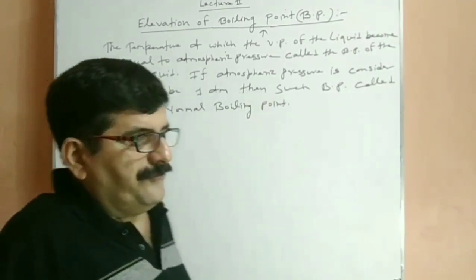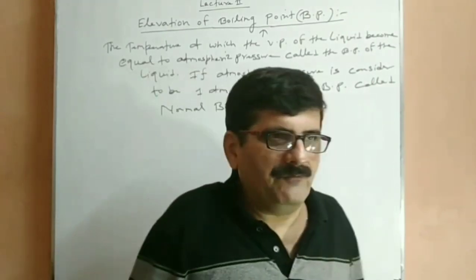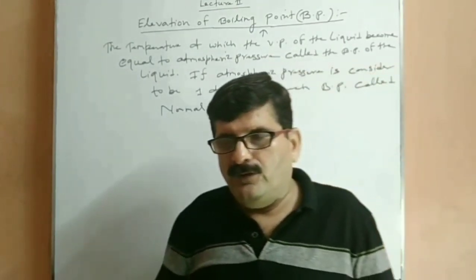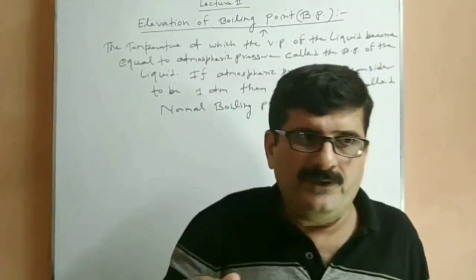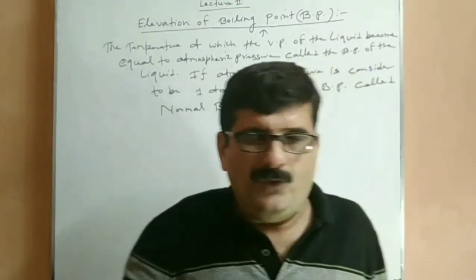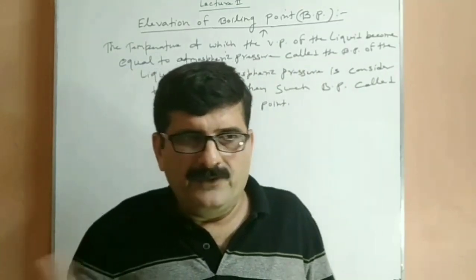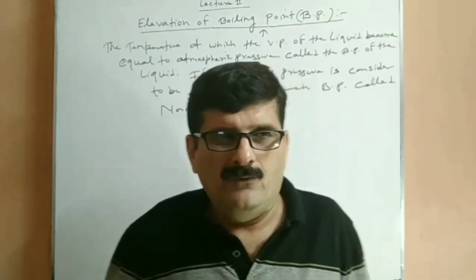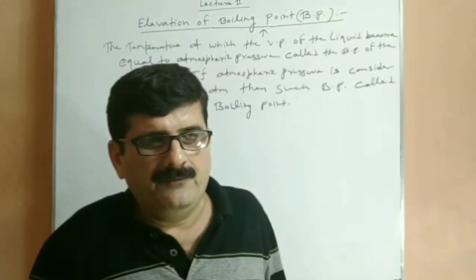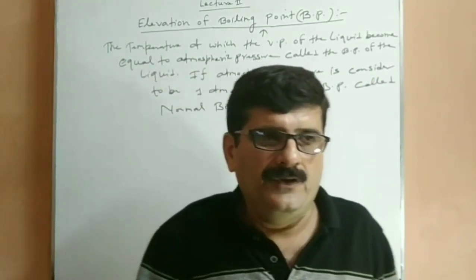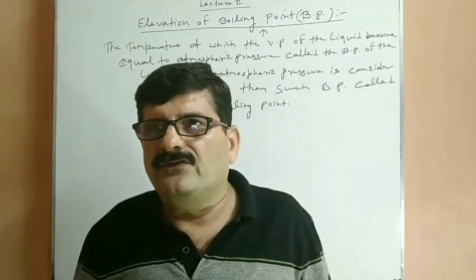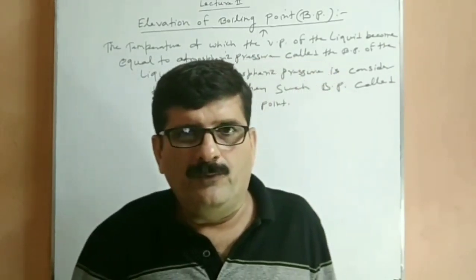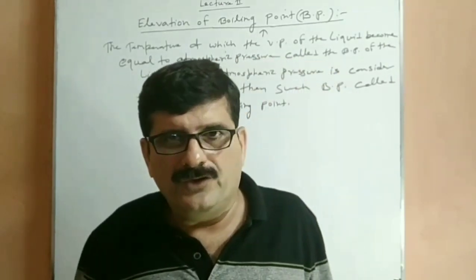So there is a slight difference between boiling point and normal boiling point. In normal boiling point, the vapor pressure of liquid must be equal to atmospheric pressure. One atmospheric pressure is equal to 760 mm of mercury, or you can say 1.013 bar.